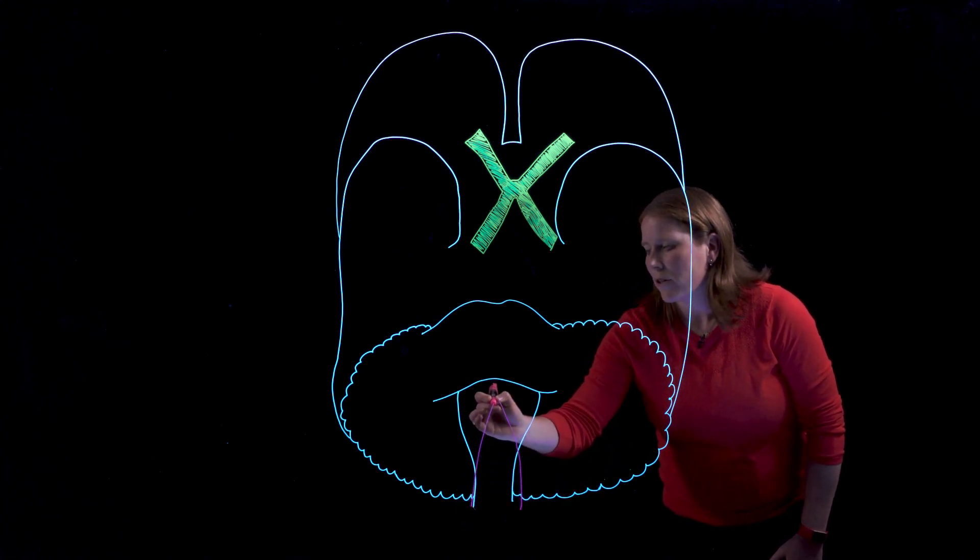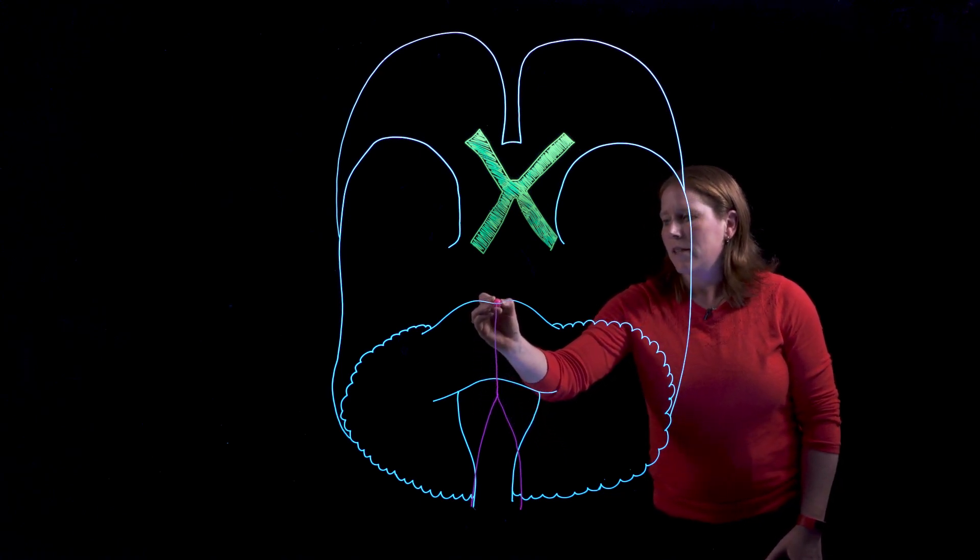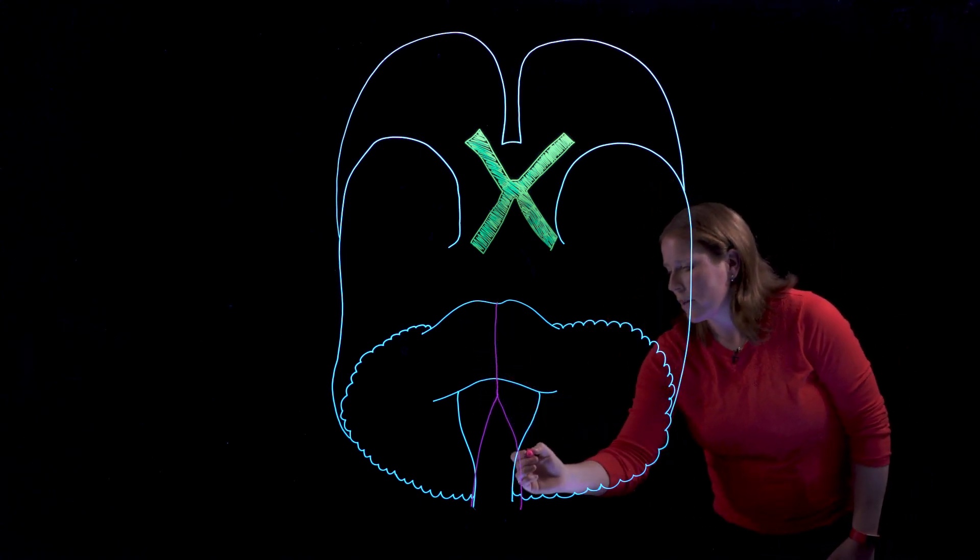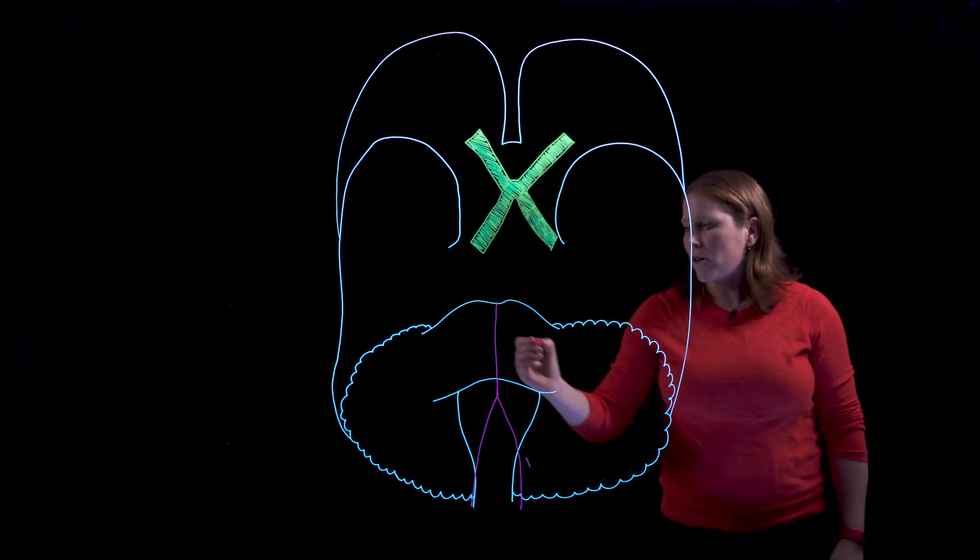Now the right and left vertebral arteries will unite to create a single midline structure. So we'll just add some labels here. So number one are vertebral arteries.